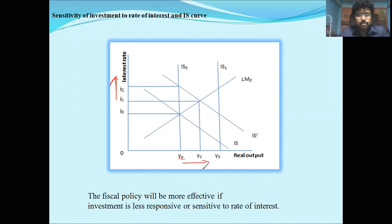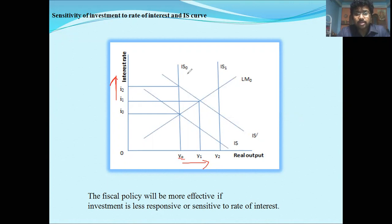What happens depending on the sensitivity of investment to the rate of interest is the shape of the IS curve changes. When the sensitivity of investment to the rate of interest is zero — that is, investment is totally inelastic — then the IS curve will be a vertical line. The IS curve will be IS-zero and it is a vertical line parallel to the vertical axis.